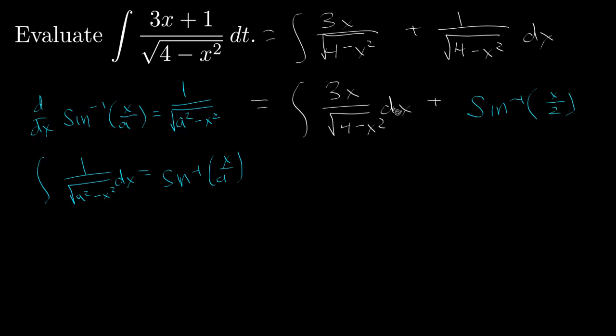Now we just have to do a u substitution for the first integral. Again, remember, u equals 4 minus x squared is going to work. So then du is minus 2x dx.